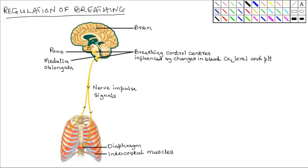Regulation of breathing in human beings. The average breathing rate in an adult human being is about 16 to 18 times per minute.